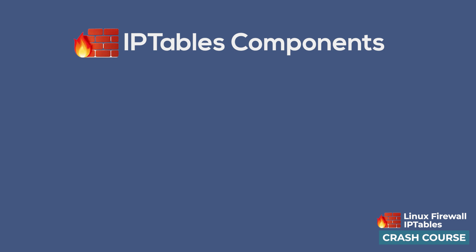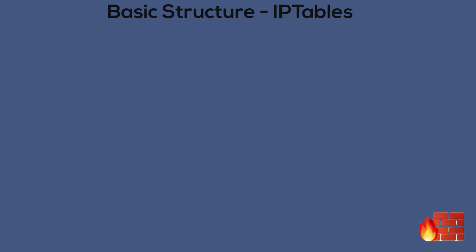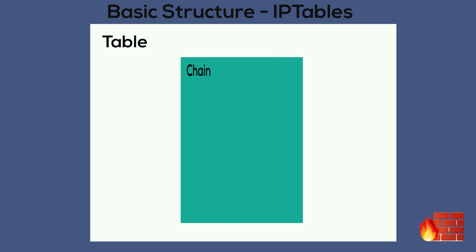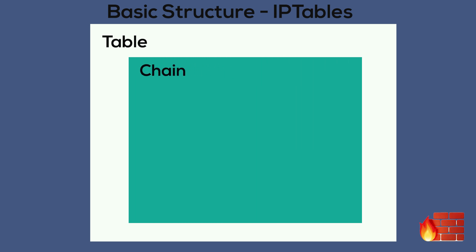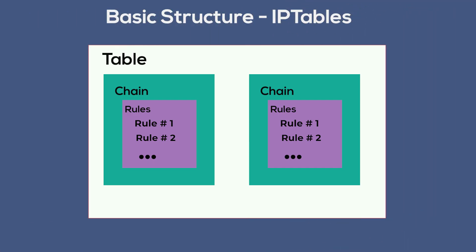Netfilter organizes its ACL, or access control list, using tables. IPtables consists of several predefined tables, and each table consists of several chains. A chain is a string of rules. When a packet is received, IPtables finds the appropriate table, then runs through the chain of rules until it finds a match. So essentially each chain can contain multiple rules, each table can contain multiple chains, and there are multiple tables as well.